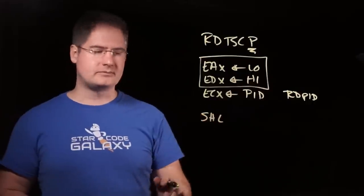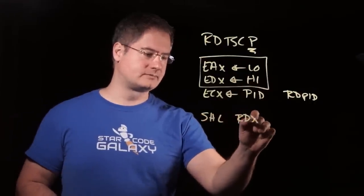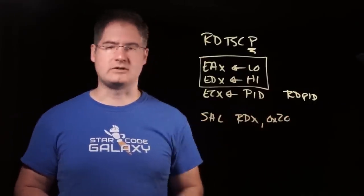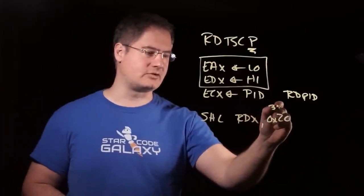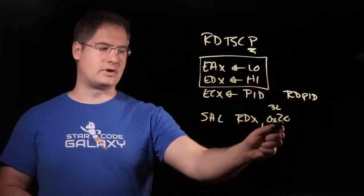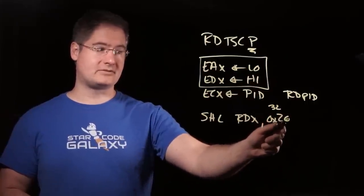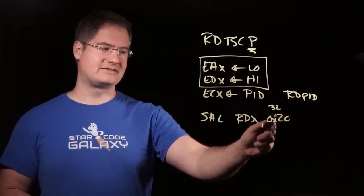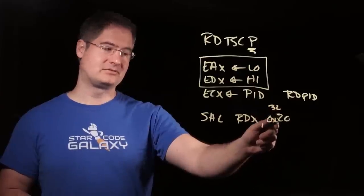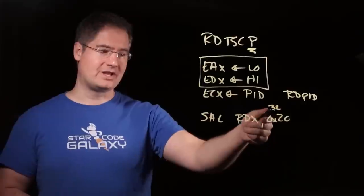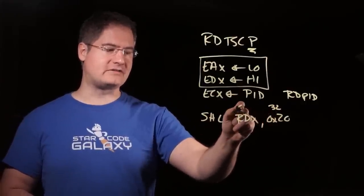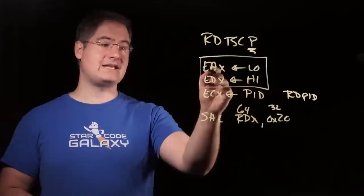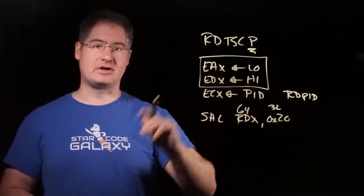It does an SHL of RDX with 0x20, 20 hex. Well, what's 20 hex? It's 32, right? So 1, 2, 4, 8 in one hex digit, right? 16, 32, 2 in the second hex digit. So this is a shift left by 32 of the 64-bit register that it put the high value in, right?